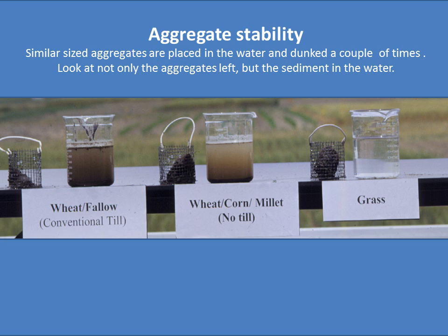Here is a good example of the importance of aggregate stability. It's a research demonstration taking samples from a conventional till field on the left, no-till in the center, and a grass field on the right. Aggregate stability is where you take aggregates of similar size, dunk them in water a few times, slowly moving them up and down, and letting them disperse. By looking at the size of the aggregates that remain, there's a big difference between those cropping systems — with the grass system allowing the most stable aggregates that could best resist raindrop impact and tillage.